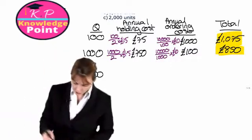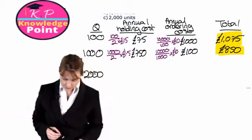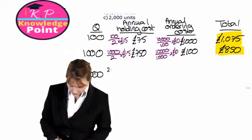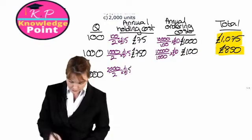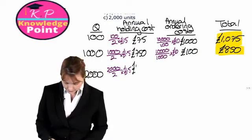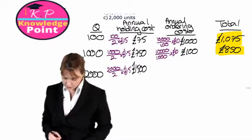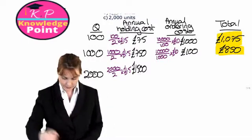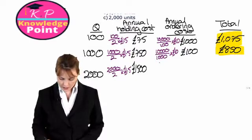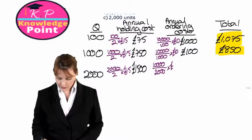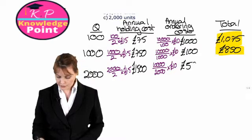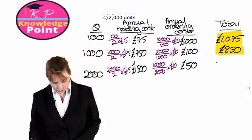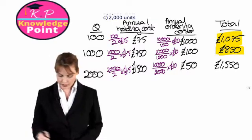At our third order quantity of 2,000 units, our annual cost of holding will be 2,000 divided by two multiplied by 1.5, giving us 1,500. Our annual ordering costs will be our demand of 10,000 divided by our order quantity multiplied by 10, giving us 50. The sum of the two is 1,550.